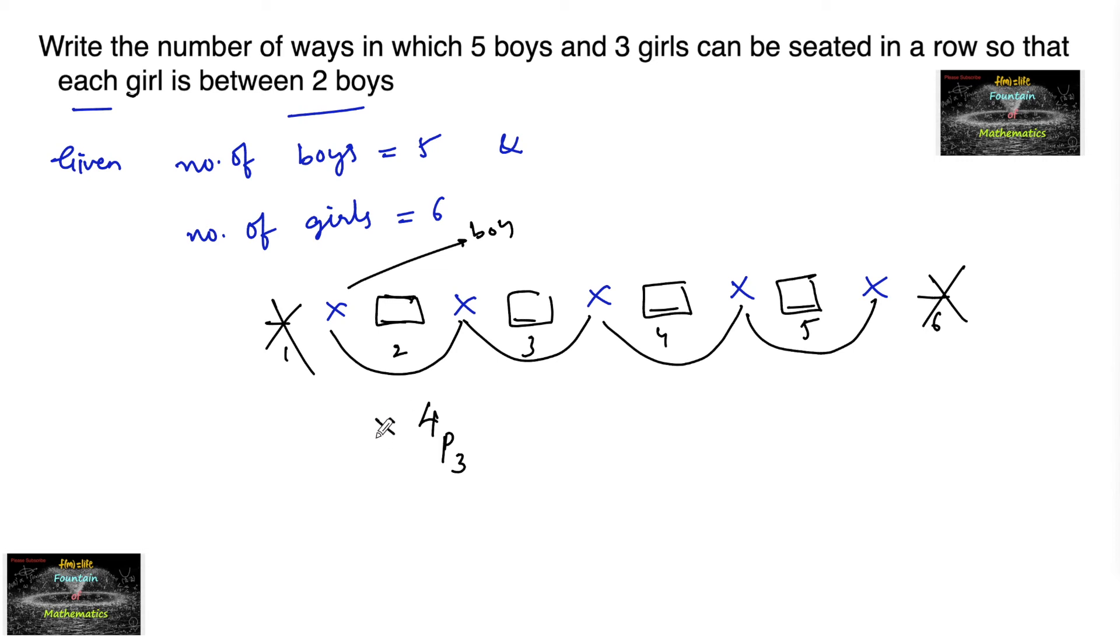And these 5 boys can be arranged among themselves in 5 factorial ways. So the required number of ways equals 5 factorial times 4P3, which equals 5 factorial times 4 factorial divided by (4-3) factorial.